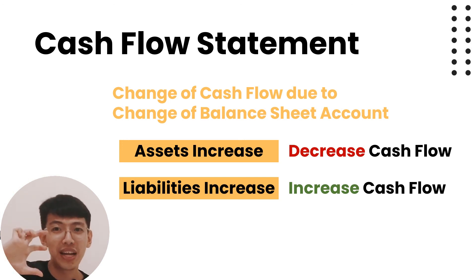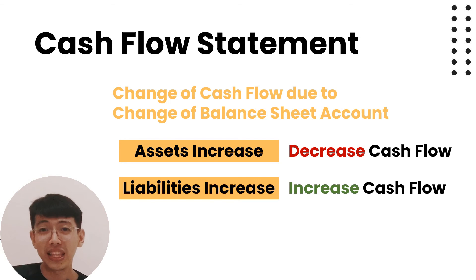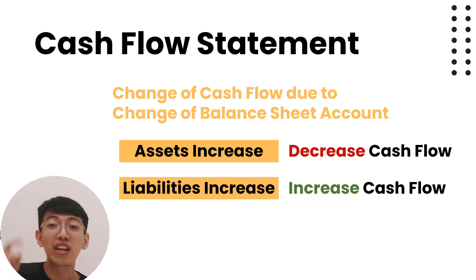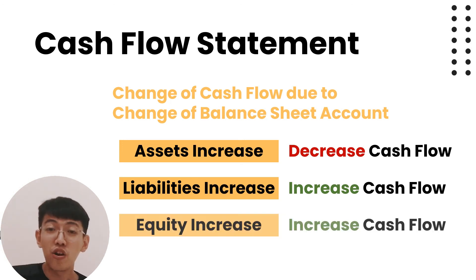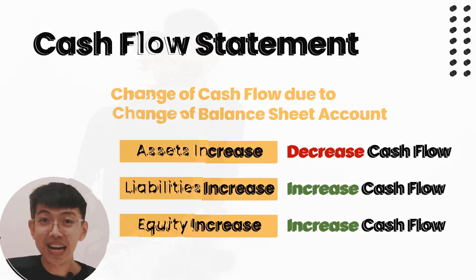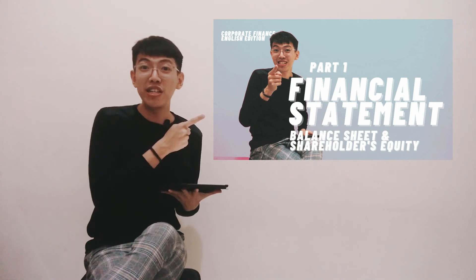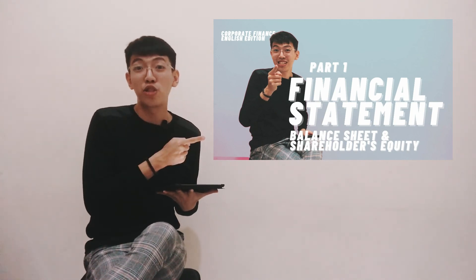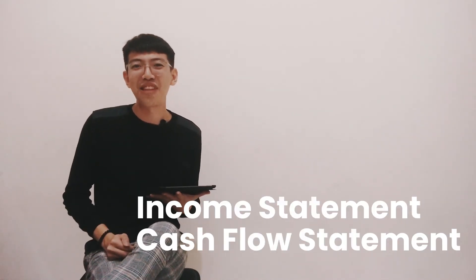If equity increases, your cash flow also increases — for example, if your company receives money from shareholders, the equity increases and the company's cash also increases. Nice, you are amazing! You have now learned all four types of financial statements: balance sheet and statement of shareholder equity from the previous video, and income statement and cash flow statement from this video.